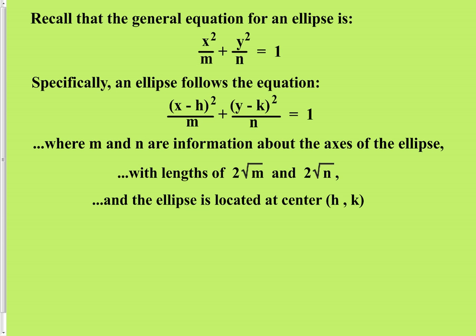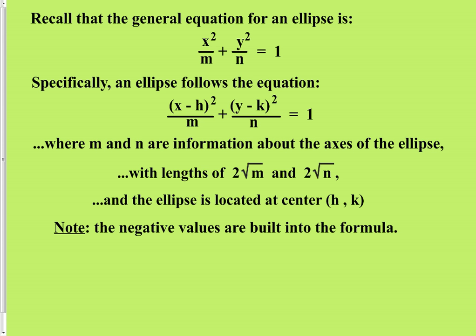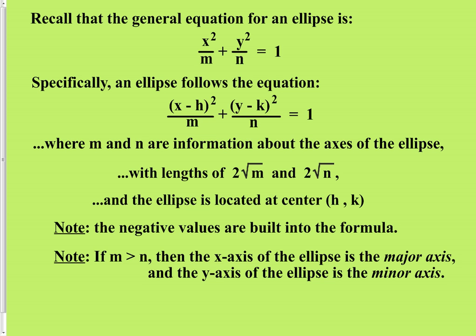Our ellipse is located at its center, which is h comma k. The negative values are built into the formula, so this is still a little bit different than how we have been reading k in the past — we're used to k being a positive value, but now it's built in as a negative value. M and n also tell us more: we have two axes in an ellipse, one horizontal and one vertical, referred to as the major axis and the minor axis. If m is a larger number than n, that is going to stretch it further in the x-axis direction than in the y-axis direction, so the sideways axis is going to be the major axis and the vertical is going to be the minor axis.